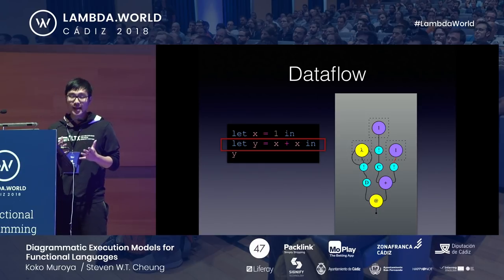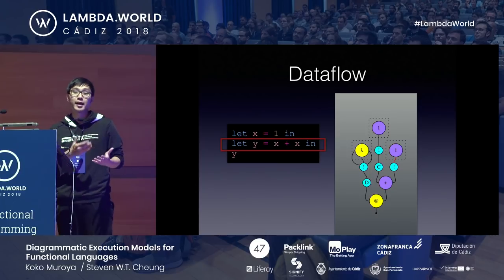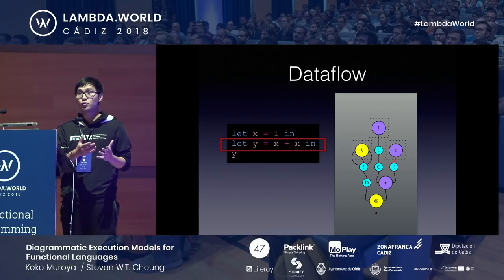During execution you can see the data flow information in the program: if you think of x as the input to a data flow graph, then y is simply dependent on x. But this information will be lost during execution because of copying the variable x and rewriting the plus node. We can preserve this data flow information by tweaking the rules a bit.